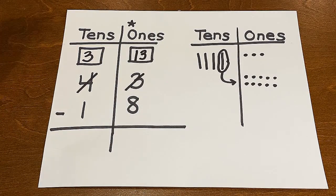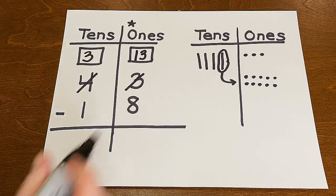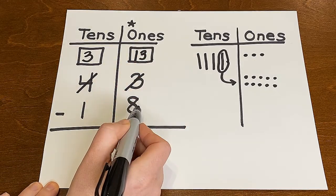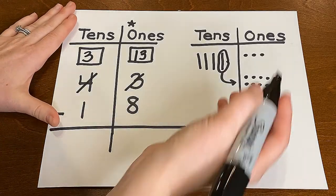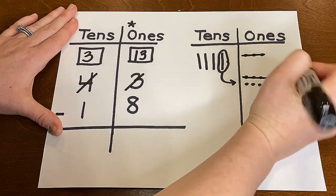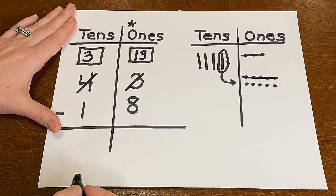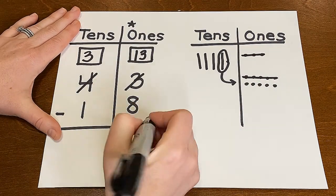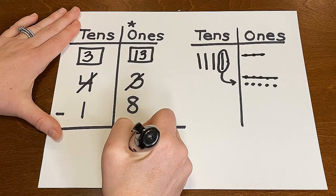Now we're ready to subtract. Thirteen take away eight. Can I do that? I certainly can. So let's take away eight. I'm gonna take these three on top, and these five here. And what am I left with? Five. That's right. So let's record the number five in the ones place.